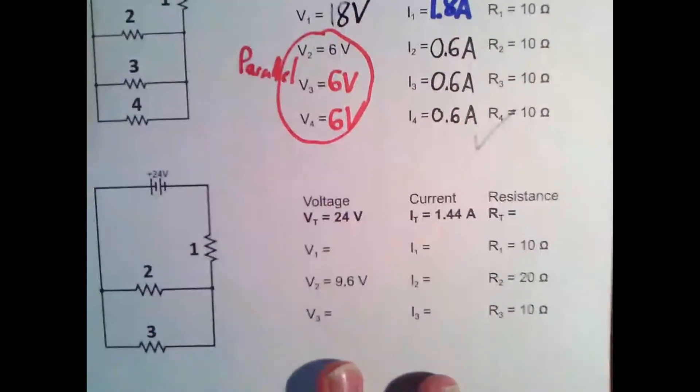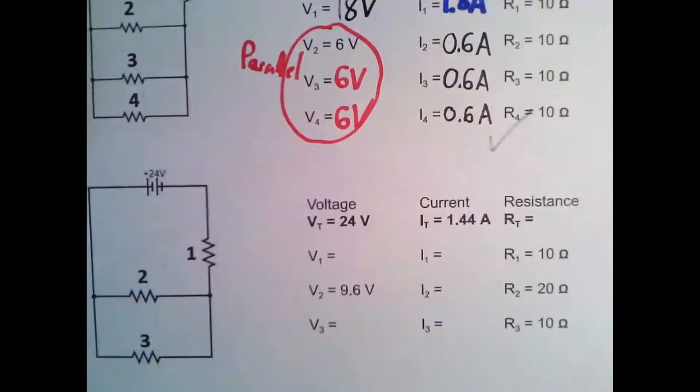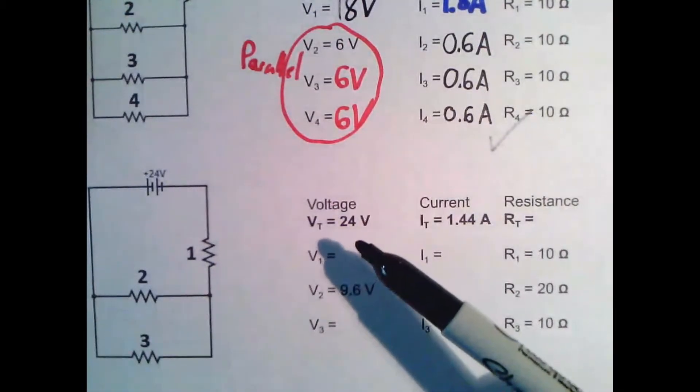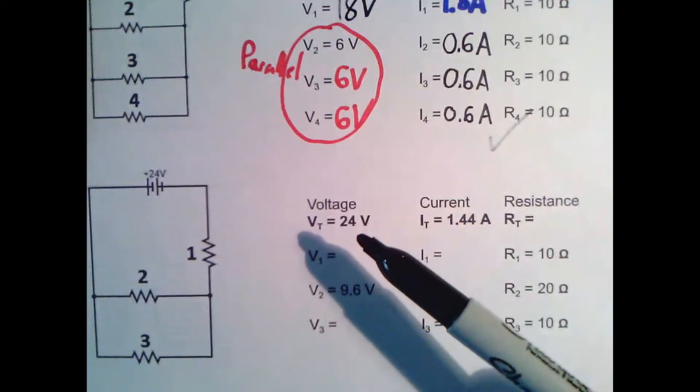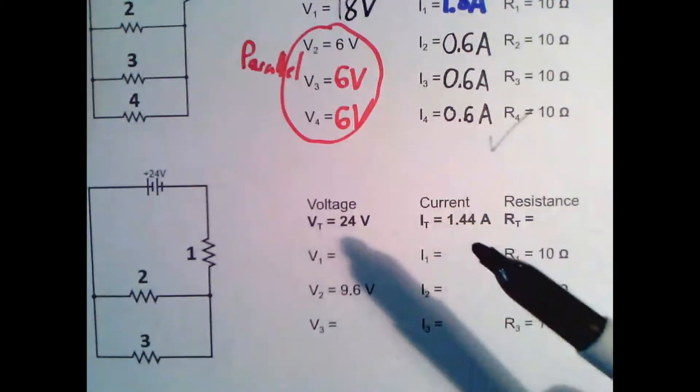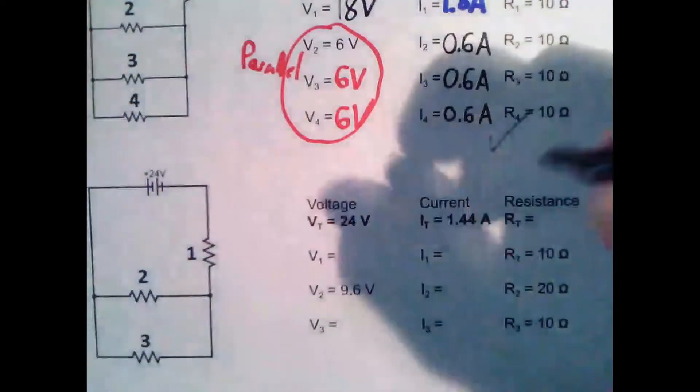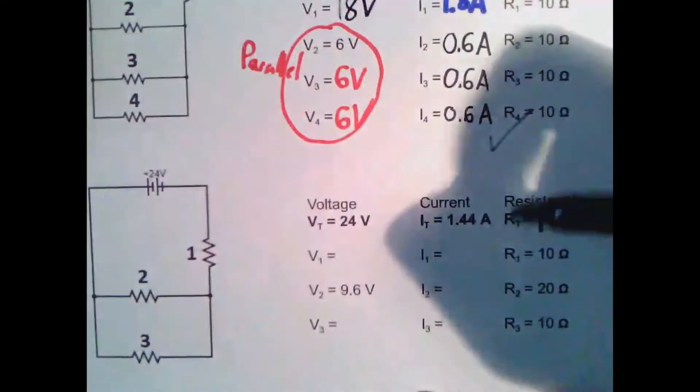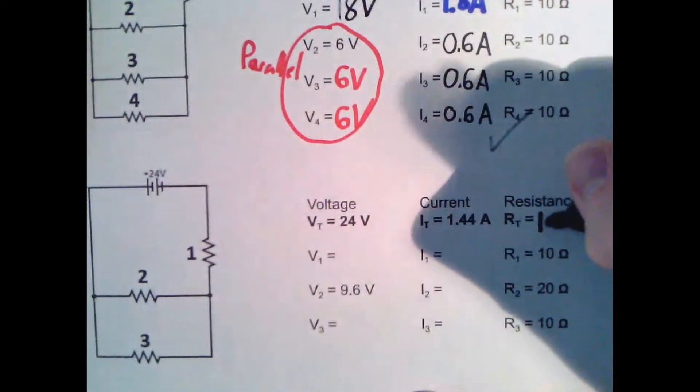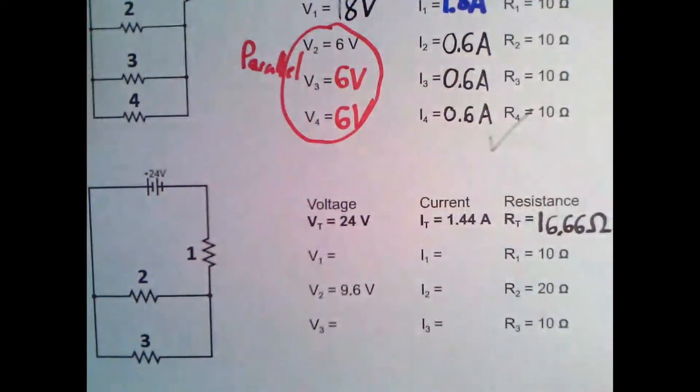Taking a look at our last one here, we have another example where you commonly know the voltage from the battery because you pick the battery yourself. So here again, we've been given the voltage for the battery, given the current, and then we're asked to find resistance. So again, resistance, we're going to divide these. So 24 divided by 1.44. Again, sorry for the weird decimals, but there we have it. You just divide them and you're good to go.